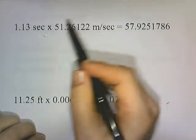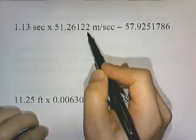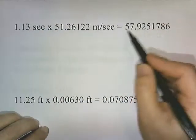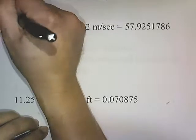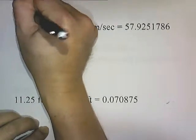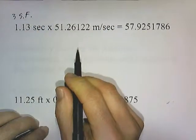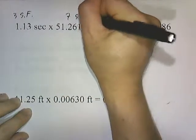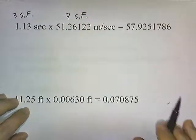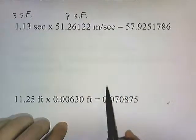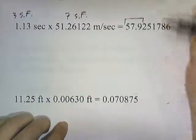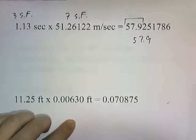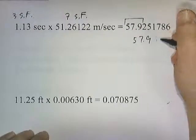For multiplication, suppose we know how long something is moving and how fast: multiplying time times velocity gives a large number on the calculator. One number has three significant figures and the other has seven, so our final answer can only have three significant figures. This rounds to 57.9 meters.